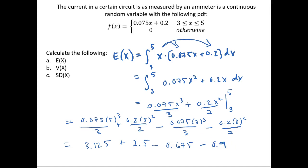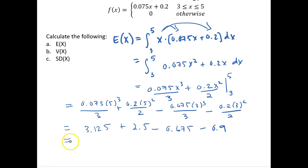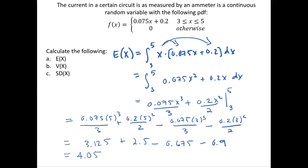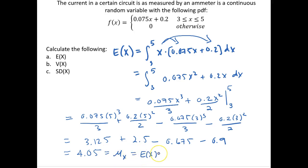Evaluating that expression, we get the expectation to be equal to 4.05. So on average, the amount of current going through the circuit is 4.05. In notation, this is also equal to mu-x, the expectation of x.